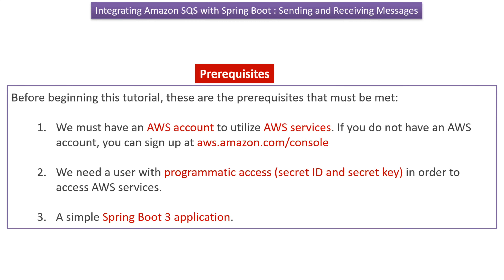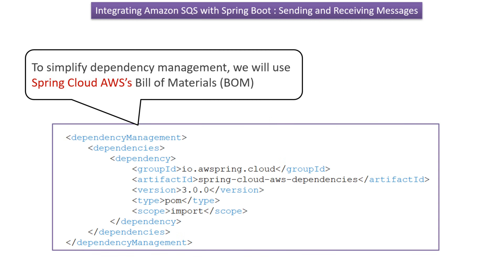Now we will see what prerequisites are needed. We must have an AWS account to utilize AWS services. If you do not have an AWS account, you can sign up at aws.amazon.com/console. We need a user with programmatic access in order to access AWS services. How to create a user with programmatic access is explained in a separate video — the link is in this video's description. We also need a simple Spring Boot 3 application, and to simplify dependency management, we will use Spring Cloud AWS bill of materials.